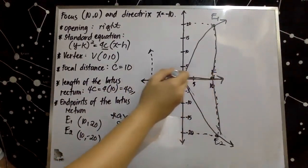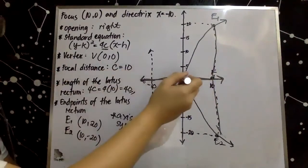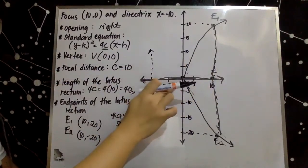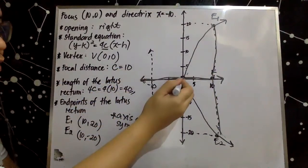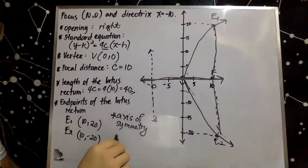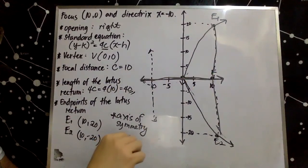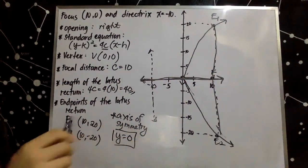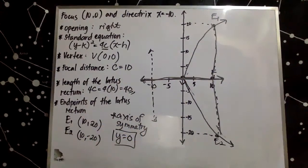The axis of symmetry is the x-axis. Observe that the axis of symmetry intersects the y-axis at this point; thus, the equation of the axis of symmetry is y equals 0.